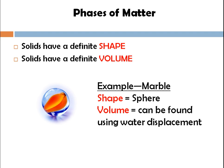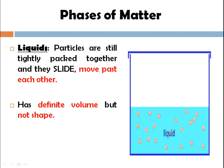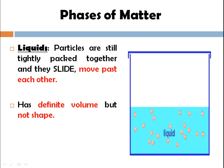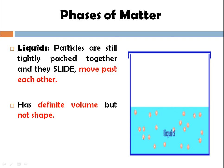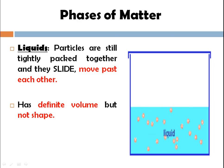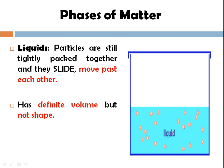Solid molecules or atoms within solids just vibrate within their shape. It has a fixed shape as well as a fixed volume. By the liquid displacement method you can measure the volume of your matter if it is in solid form. Liquid particles are still tightly packed together, but they slide and move past each other, whereas solid molecules do not. Solids have a stronger force of attraction between their particles compared to liquids.